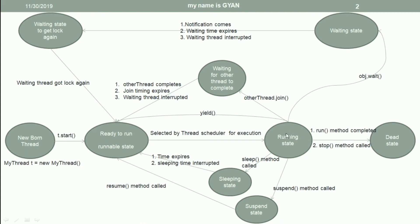If a thread is in the running state and calls the wait method, then the thread will go to the waiting state. If the notification comes from the thread for which it was waiting, or if the waiting time expires, or if the waiting thread is interrupted — in these three cases, the waiting thread will try to get a lock again. After getting the lock, the thread will go to the ready to run state.